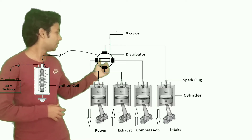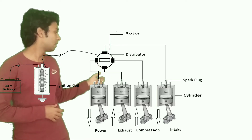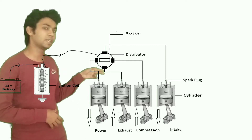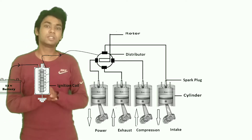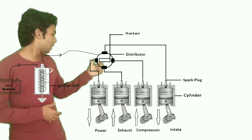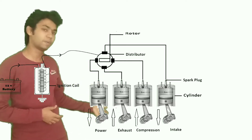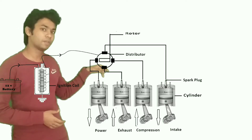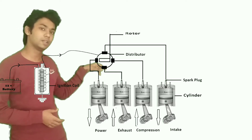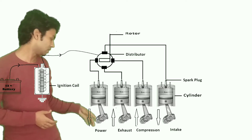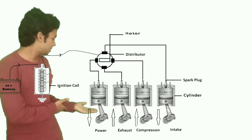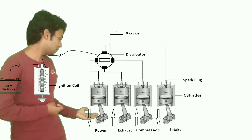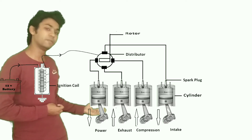In the distributor, you can see that there are four contact breakers present at each 90 degrees, and there is a rotor present in the center. The distributor distributes the current through high voltage wires to each of the four cylinders. When the rotor comes in contact with the first contact breaker, a current signal is triggered and it reaches to the first cylinder. During this initial state, the four cylinders will be in four different strokes.